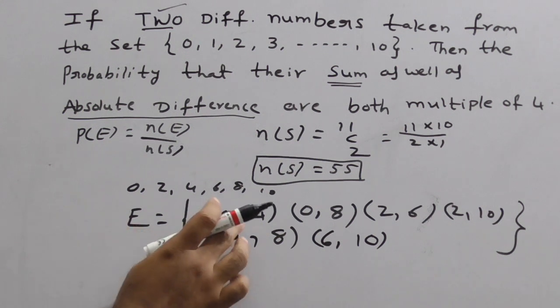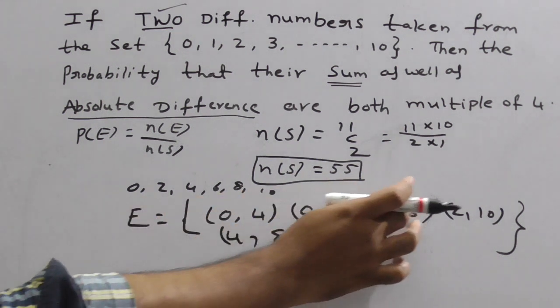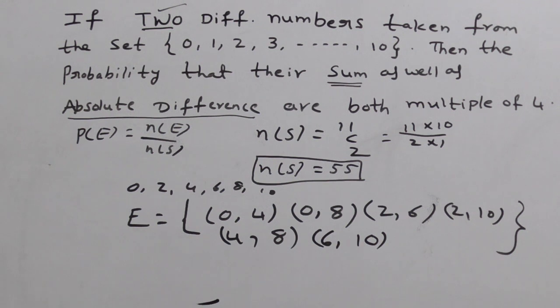Now calculate or count. How many numbers in E? 1, 2, 3, 4, 5, 6. In E we have 6 elements. Therefore, N of E is equal to 6.